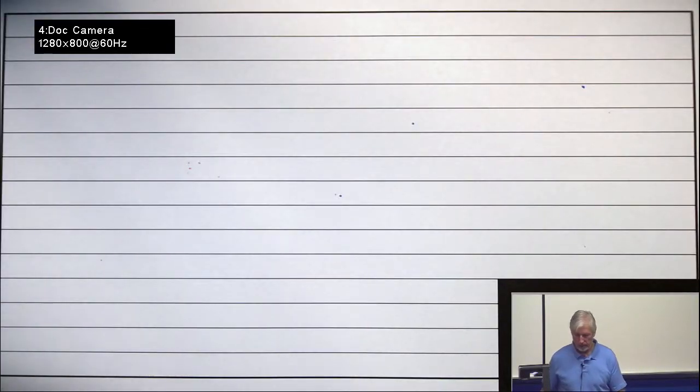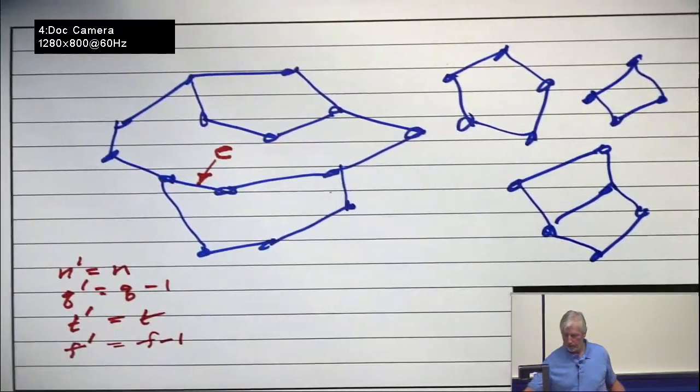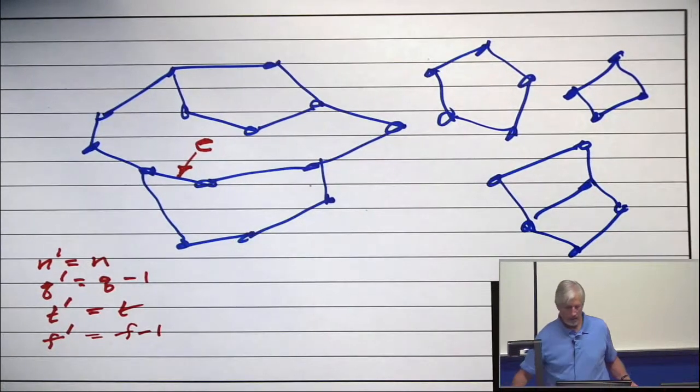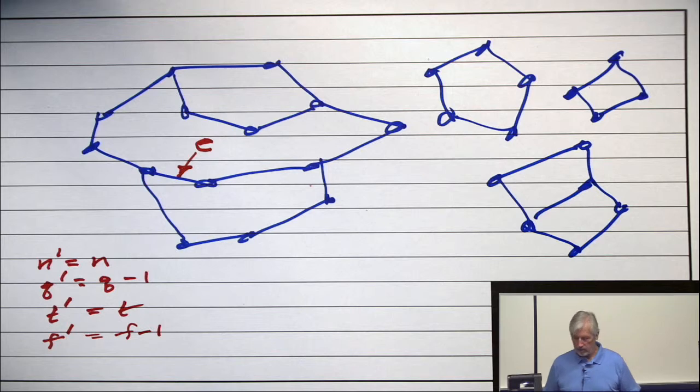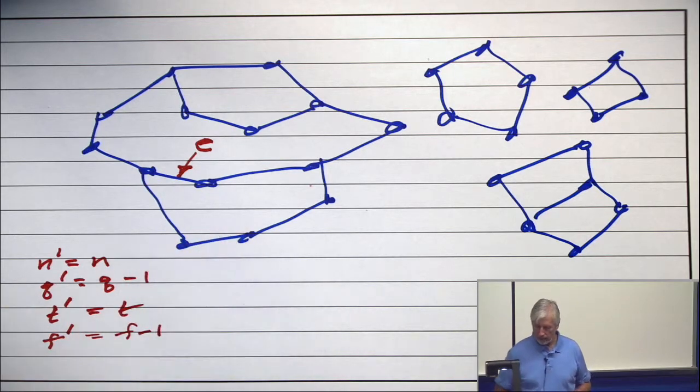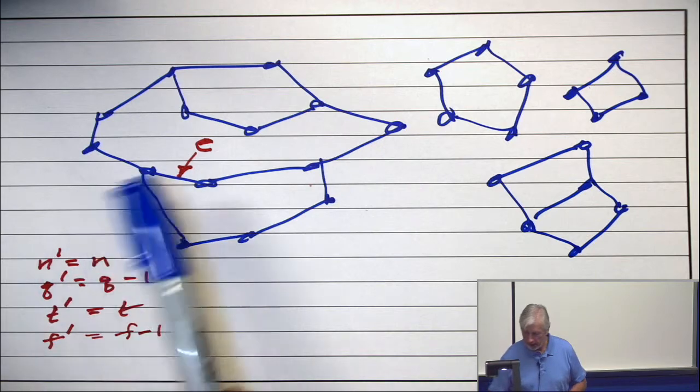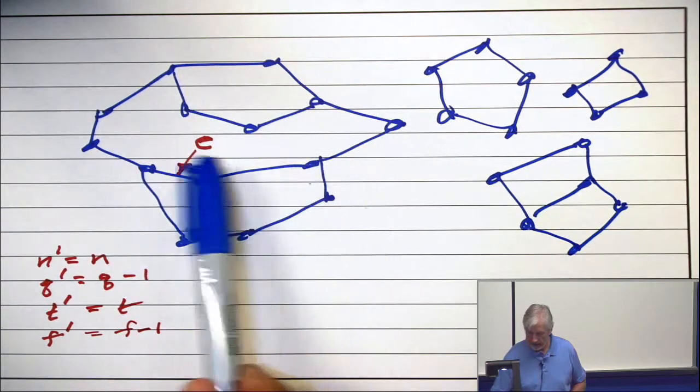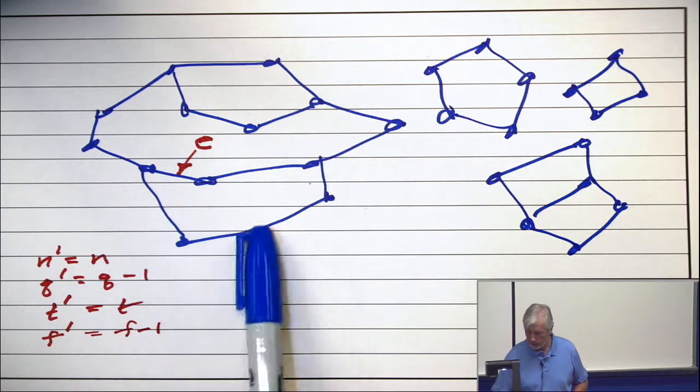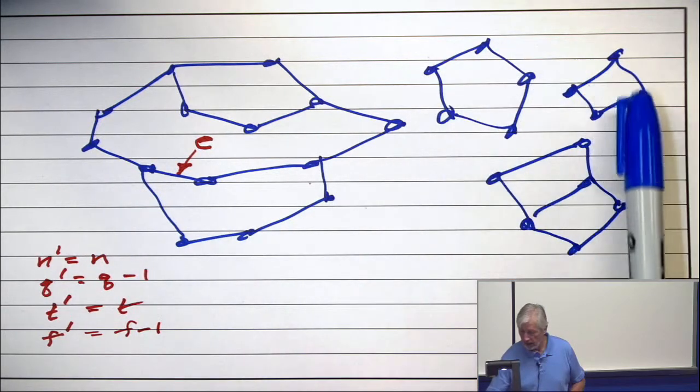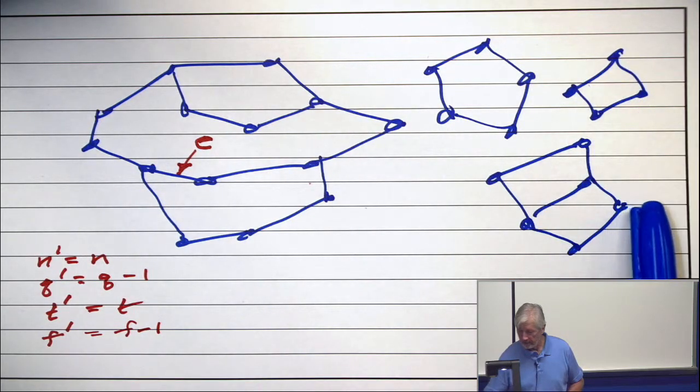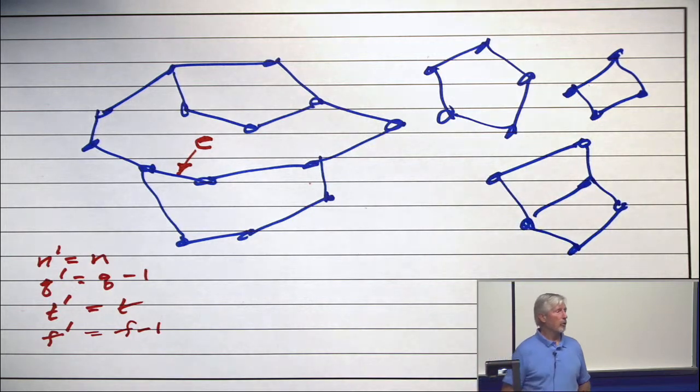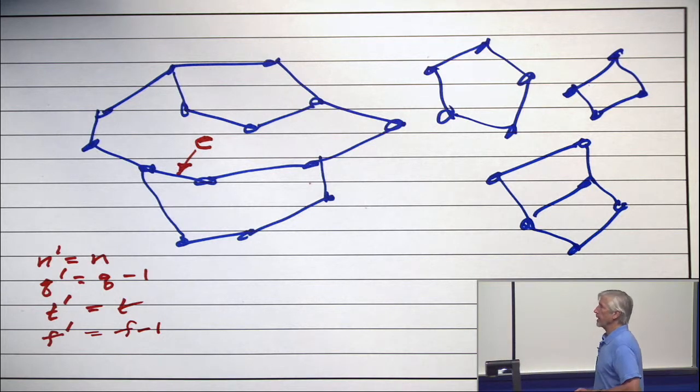Let me start by putting up this old picture. Here is a planar graph. Let's just look at the blue. How many? One, two, three, four, five, six, seven, eight, nine, ten, eleven, twelve, thirteen, fourteen, nineteen, twenty-three, twenty-nine. Twenty-nine vertices. All right, that's a planar graph and it has twenty-nine vertices.